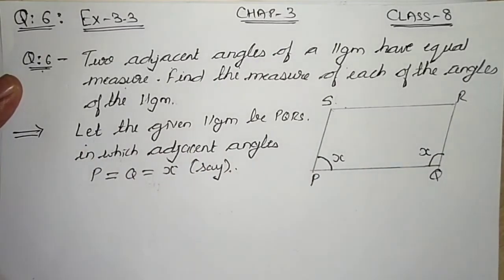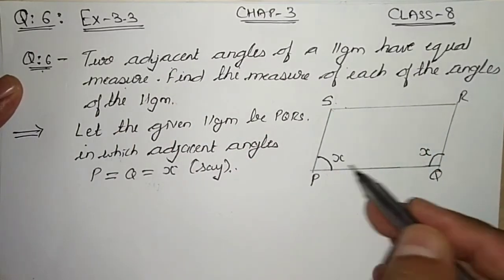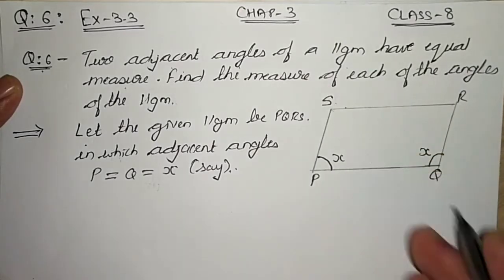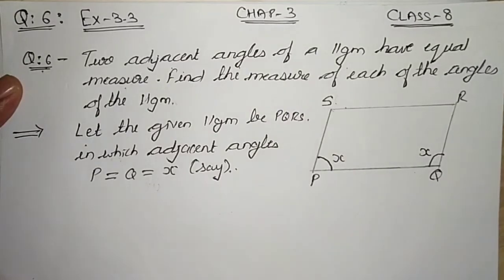They have given one hint that two adjacent angles, whether it is P and S, P and Q, Q and R, or R and S, two of them are of equal measures.